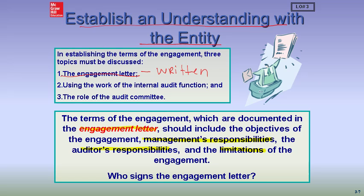We need to make sure the client understands there's always a potential that a material misstatement will not be identified — we are not guarantors of the financial statements, and there is a potential that fraud will not be detected. We point out the limitations of the engagement and also the objective, which is to give an opinion. We can have an unmodified unqualified opinion, or a qualified, adverse, or disclaimer. We also point out that we only give reasonable assurance, not absolute assurance.